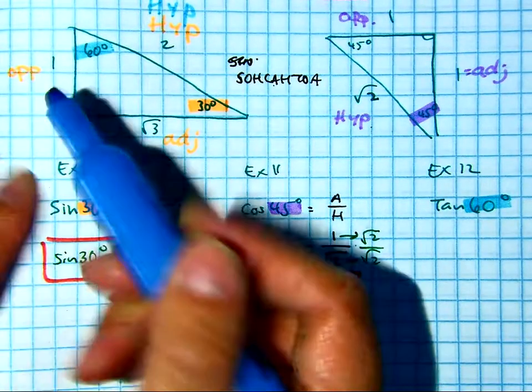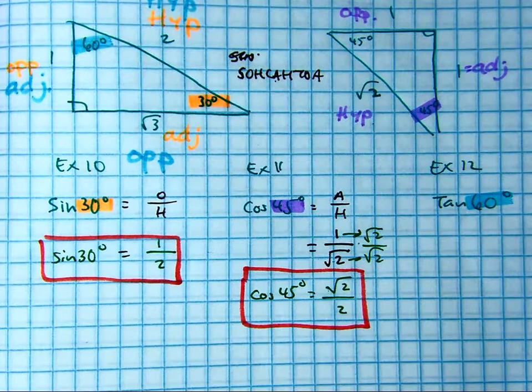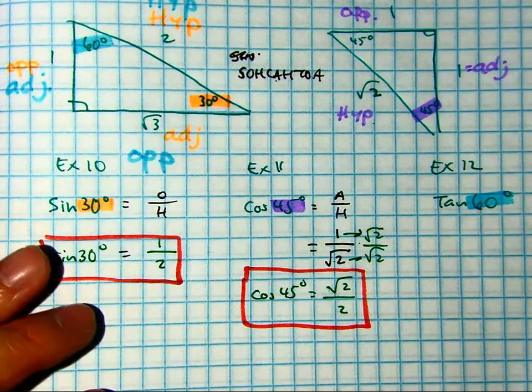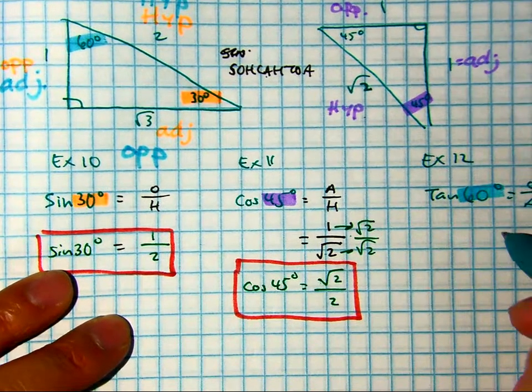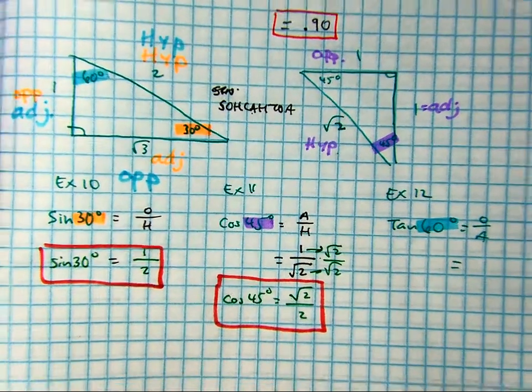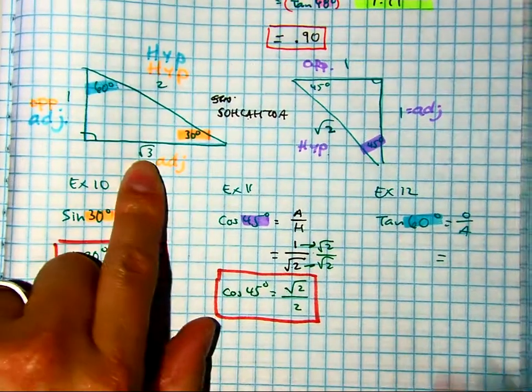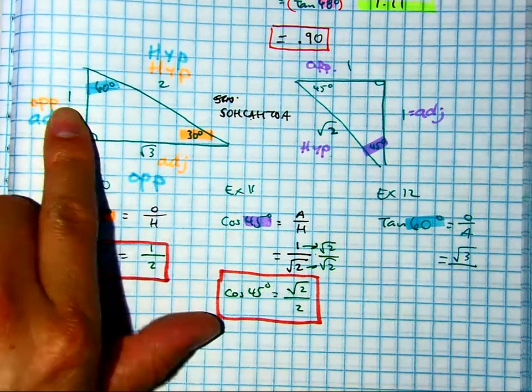Class, which two sides is tangent? Opposite over the adjacent. So then I just look over here on my triangle. Opposite is radical three. The adjacent is one. Therefore, the tangent of 60 degrees is equal to radical three.